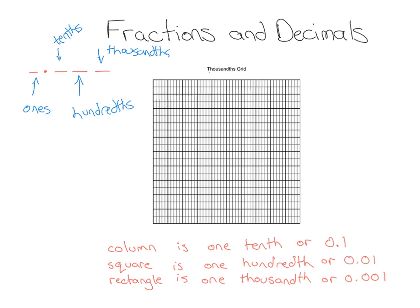Today we're really going to focus on using thousandths grids to help us. All a thousandths grid is is basically a grid that is divided up into a thousand chunks. So if you have a column — a column means up and down — you can see there's this dark black line here; this would be a column.